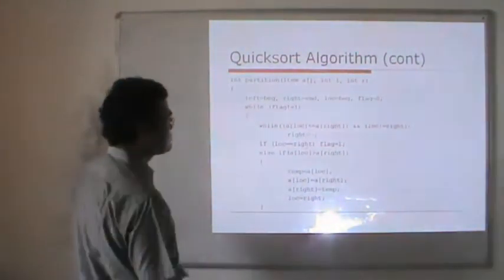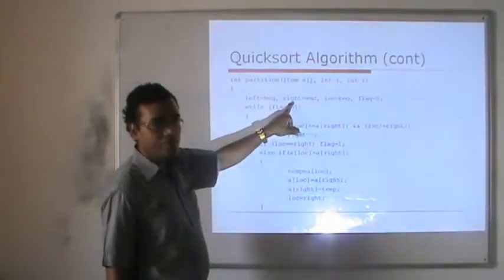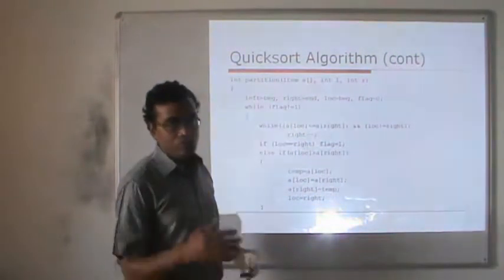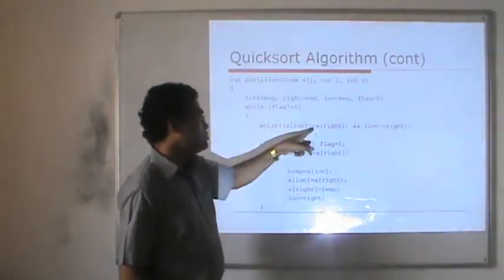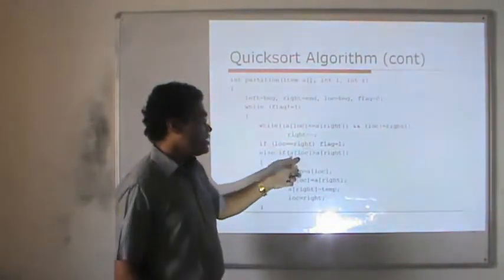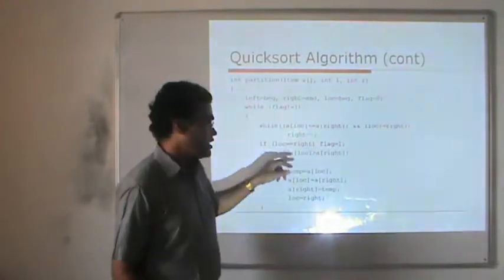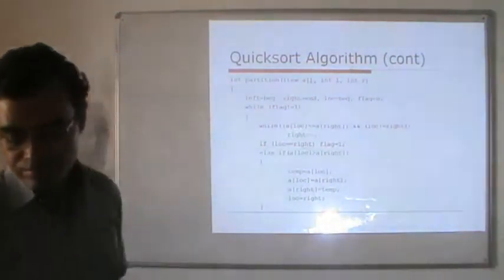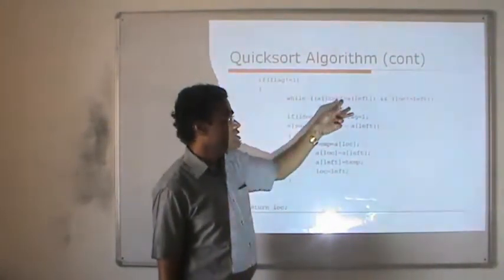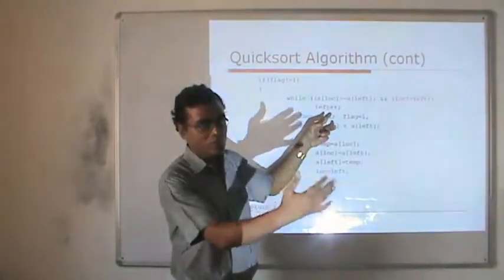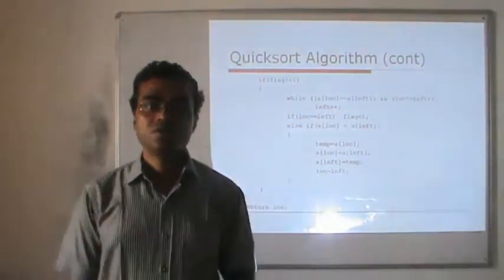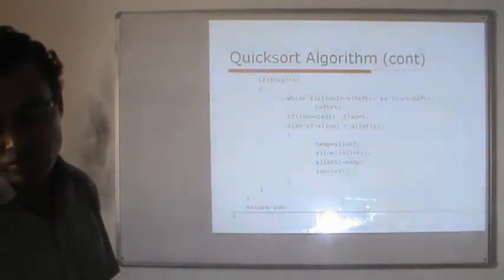Here is the partition algorithm. Left is taken from the beginning, right from the end, location from the beginning. We move the right from right to left as long as A[right] is greater than A[location] — right keeps moving. If at some point A[location] is greater than A[right], then exchange the elements at location and right. Similarly, we start left moving from left to right as long as A[location] is greater than A[left] — left keeps moving. If A[location] is less than A[left], then exchange both. By this process, we can perform the sorting algorithm with the help of quicksort.